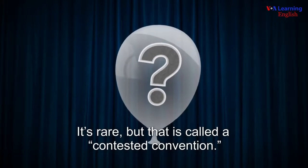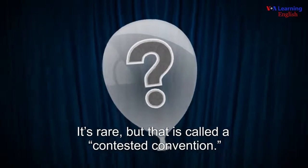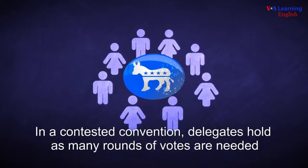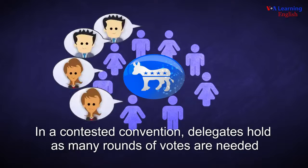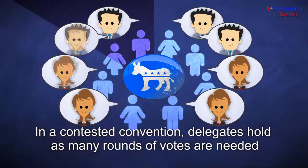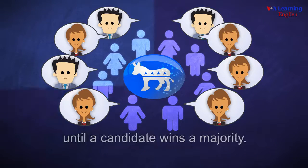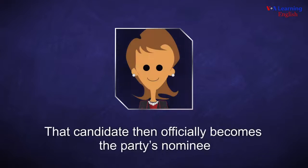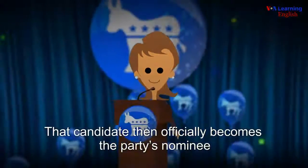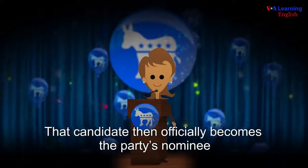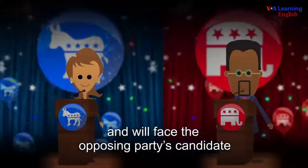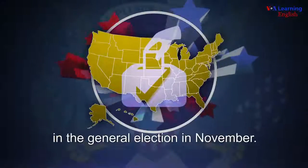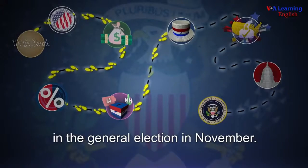It's rare, but that is called a contested convention. In a contested convention, delegates hold as many rounds of votes as needed until a candidate wins a majority. That candidate then officially becomes the party's nominee and will face the opposing party's candidate in the general election in November.